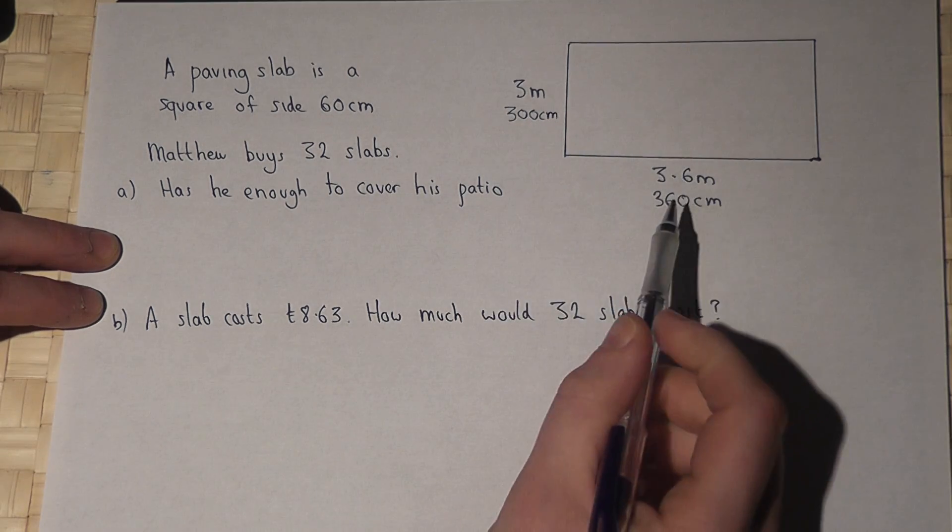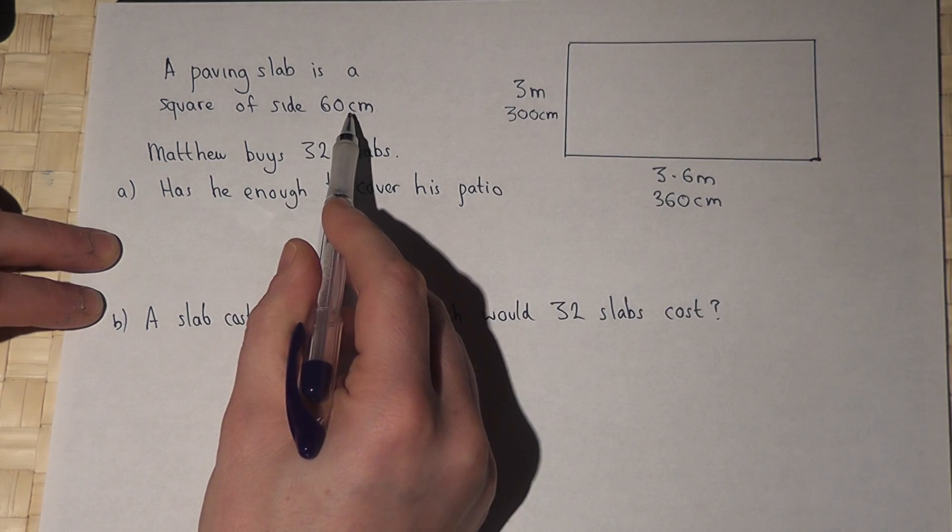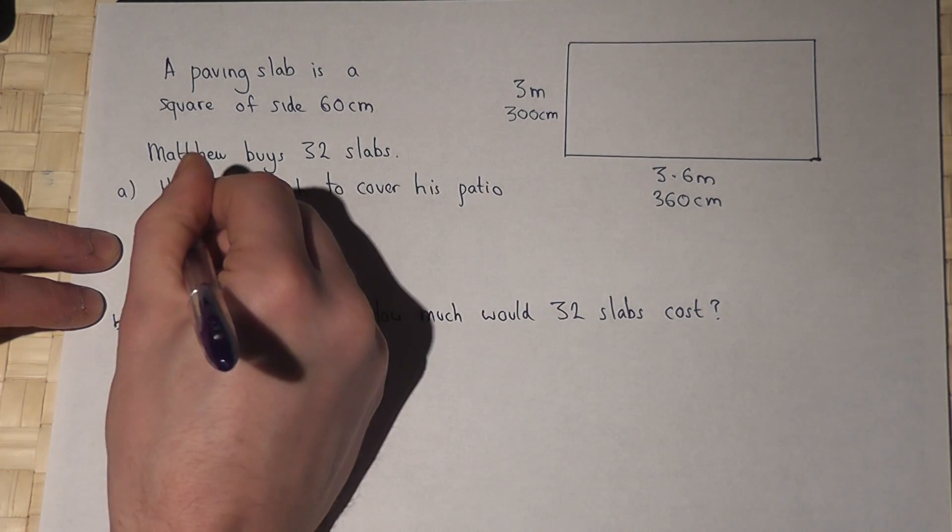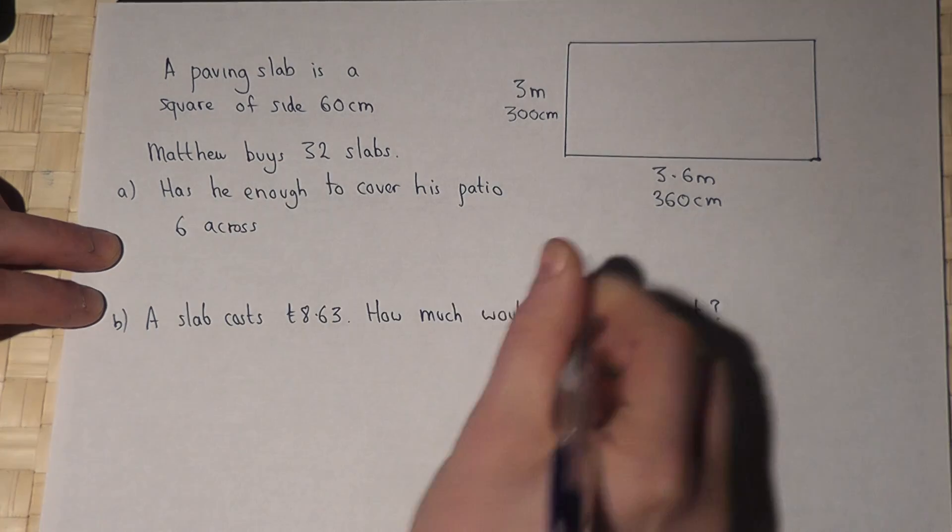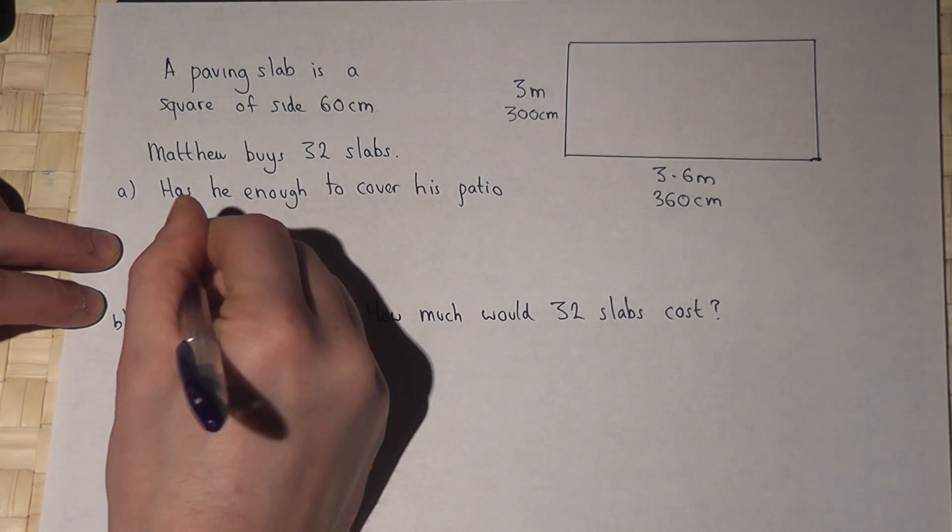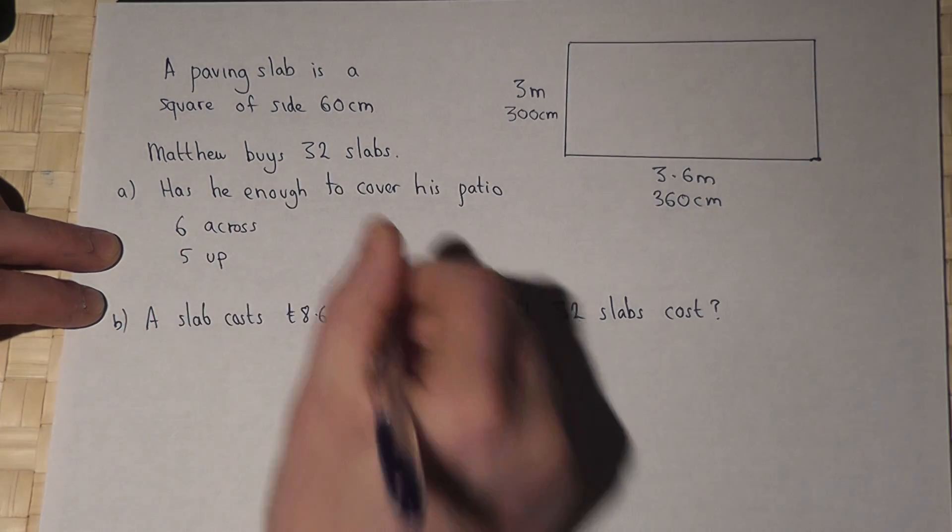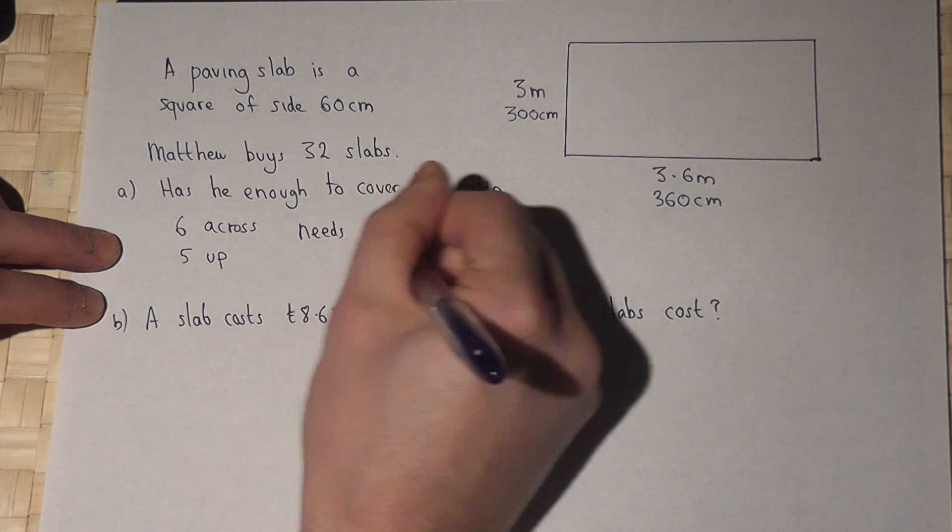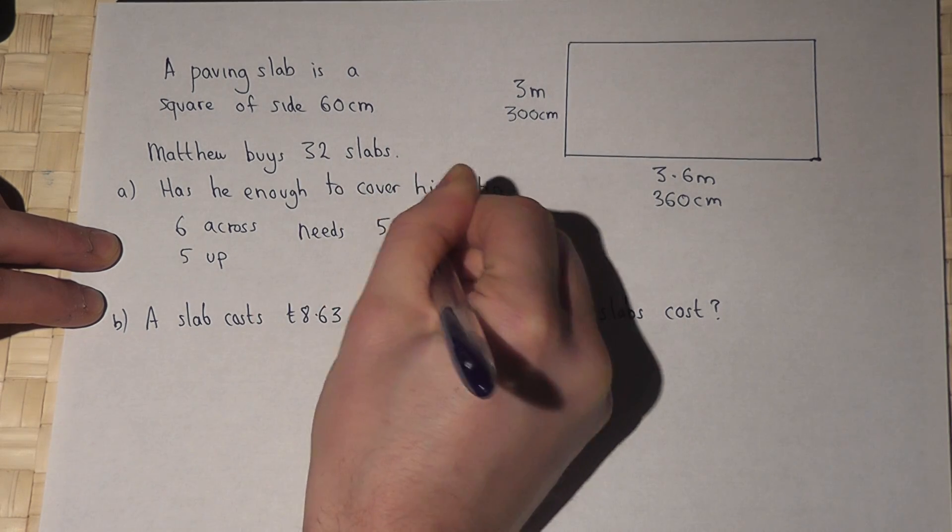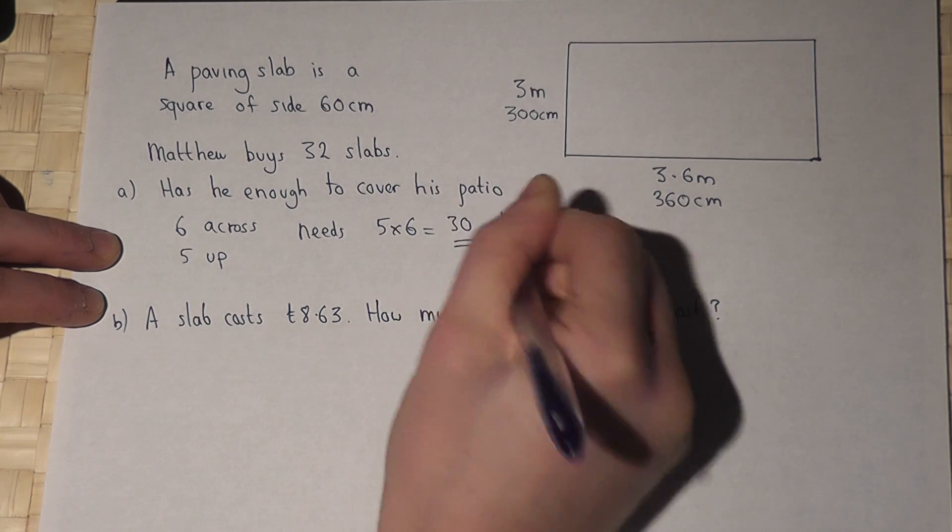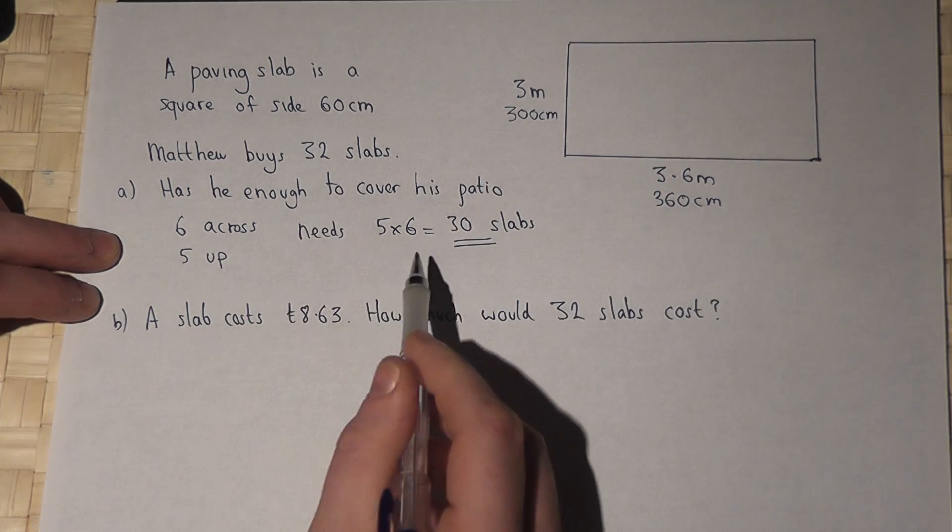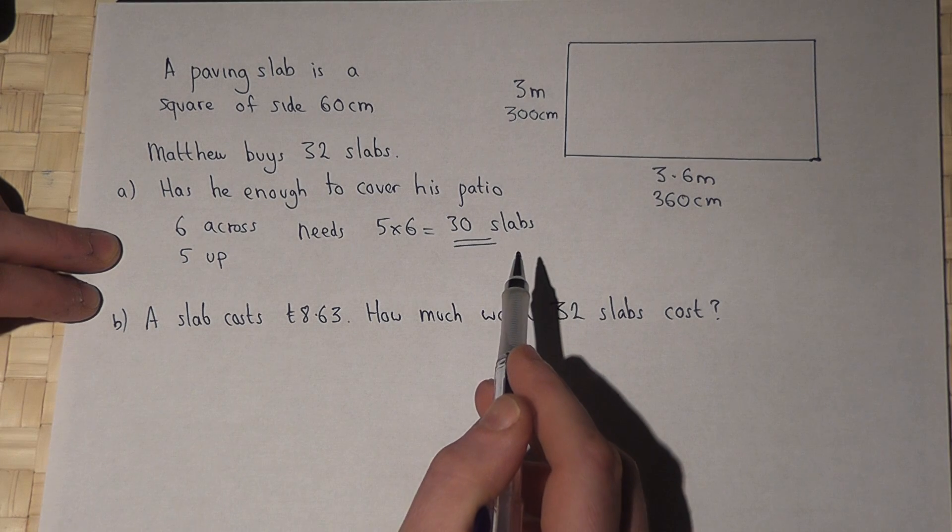So, because the slabs have a side of 60, he will need 6 to go across, he will need 5 to go up, so he needs 5 lots of 6, which is 30 slabs. He has 32, so yes, he's got enough, he's got 2 extra.